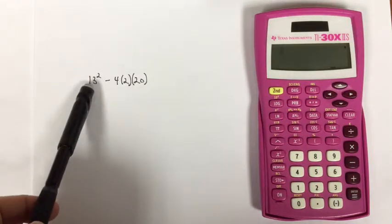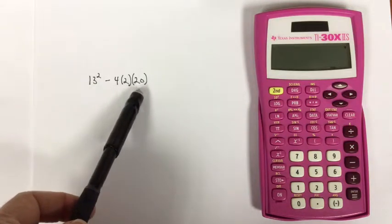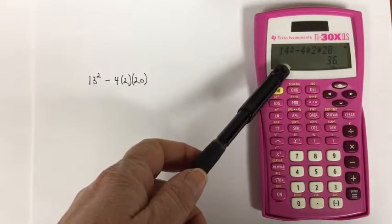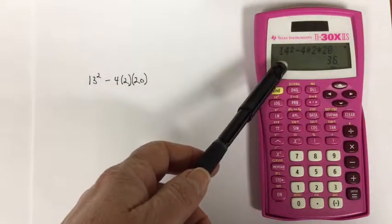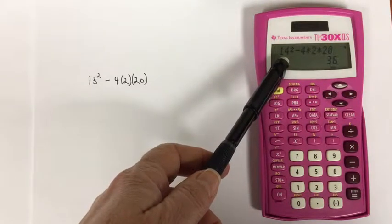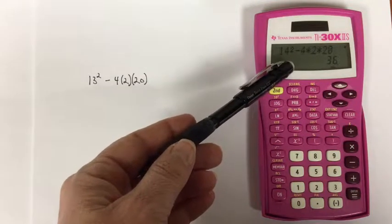Let's take a look at an expression like this one – 13 squared minus 4 times 2 times 20. Let's say that you've entered that command on your calculator, and then after you press equal, you notice that instead of 13 squared, you accidentally put in 14 squared.